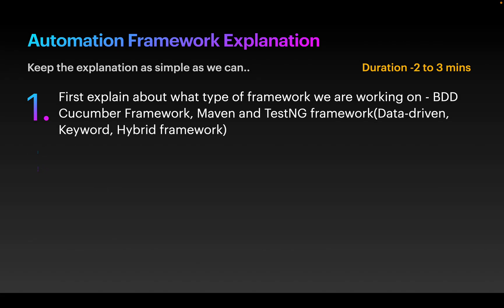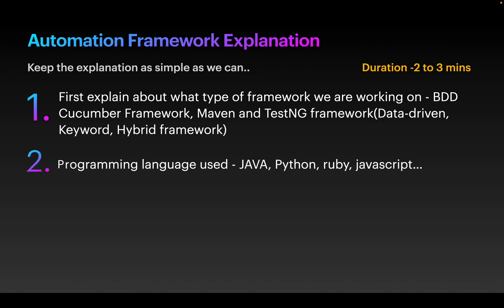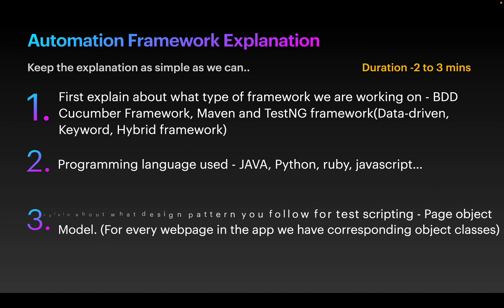The next thing is you have to explain what programming language you are working on — it can be Java, VBScript, or Python. After that, explain the design pattern you are following in your automation framework. Page Object Model is a design pattern mostly followed because for every web page in the application we have corresponding object classes.